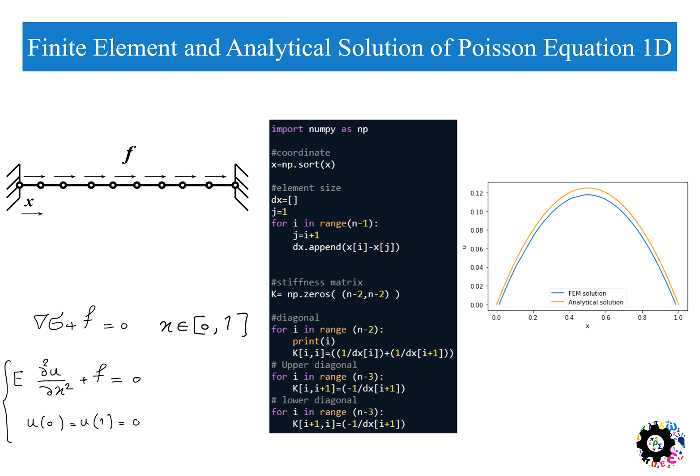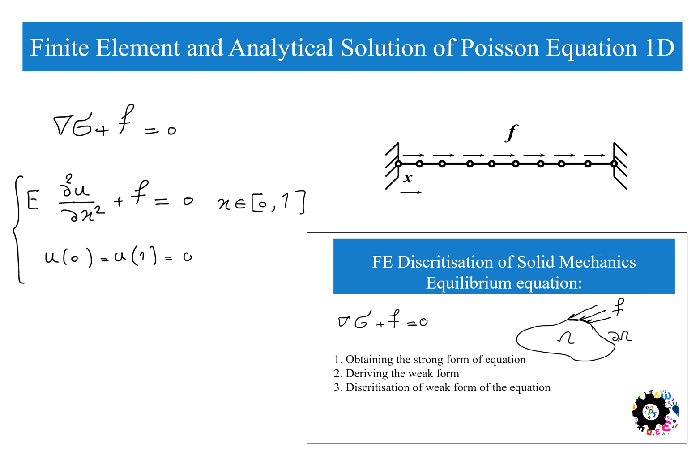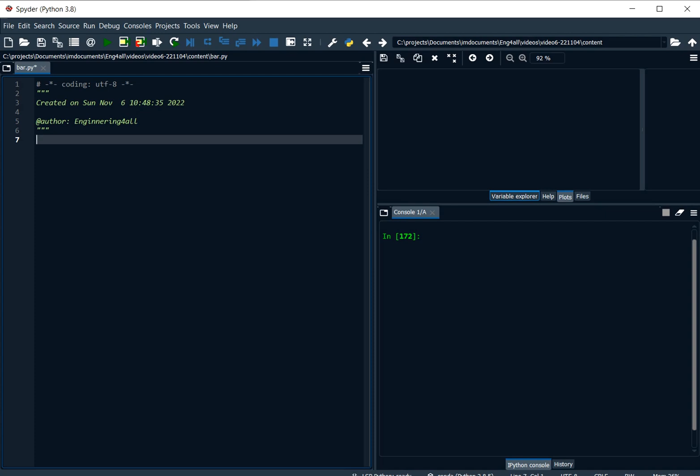In the last video I shared in this channel, I explained how to solve the equilibrium equation and obtain the strong form in the form of a Poisson equation, then derive the weak form and discretize this equation using finite elements in the case of a one-dimensional problem.